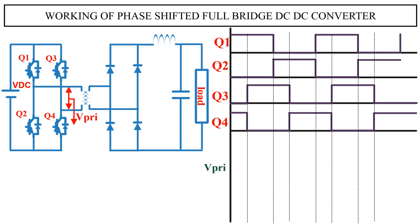Now we will draw the voltage across the transformer primary winding. First switch Q1 and Q4 is on, so the transformer voltage will be plus VDC. Next switch Q1 and Q3 is on. During this period, the transformer gets short circuit, so the voltage across it becomes zero.